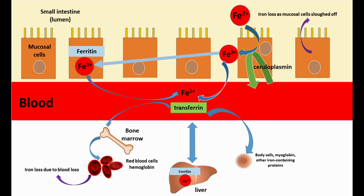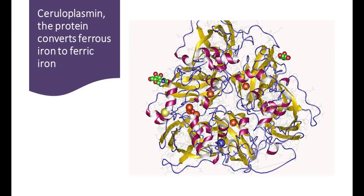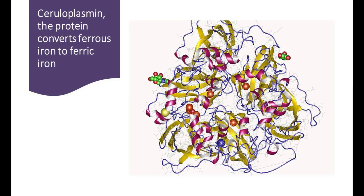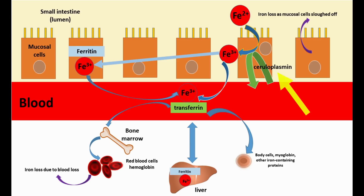Three proteins regulate the delivery and transport of iron in the body: the copper-containing protein ceruloplasmin, the iron-transport protein transferrin, and the iron-storage protein ferritin. Ceruloplasmin converts ferrous iron to ferric iron, and the ferric iron ion can then bind to transferrin and ferritin. Iron that has entered the mucosal cells of the small intestine can be bound to ferritin or picked up and transported by transferrin through the bloodstream to the liver, bones, and other body tissues. In body tissues, transferrin receptors on cell membranes bind to the transferrin-iron complex, allowing it to enter the cell where the iron is released for use. Our bodies are intelligent in adjusting iron absorption through the dynamic balancing of iron storage and transport proteins and their receptors on the cell membrane.